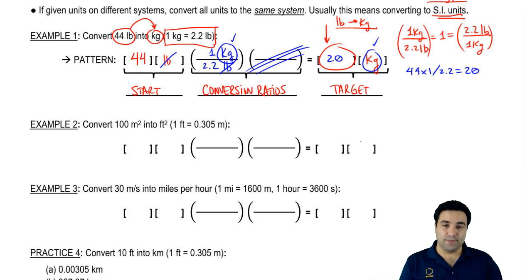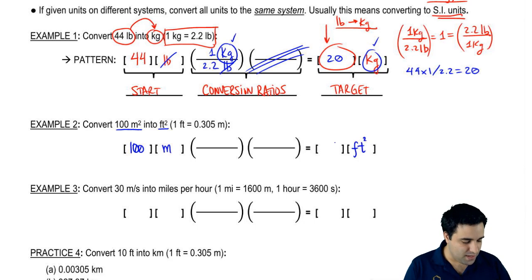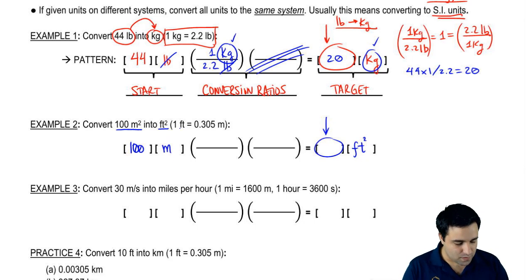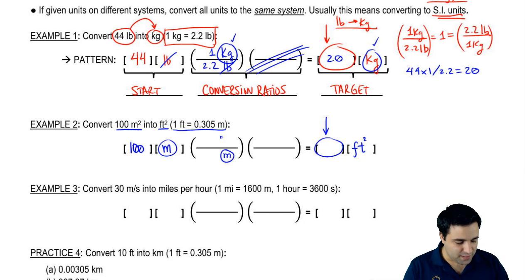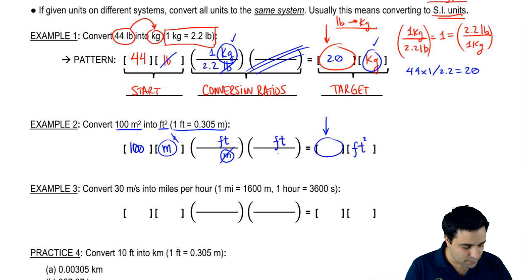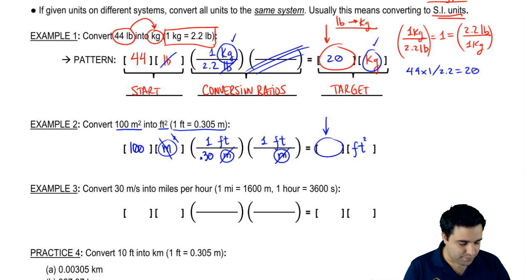In example two, I have 100 meters squared to convert into feet squared. The novelty here — the new thing — is that I have a square, so you have to be careful how to handle those. Starting units: 100 meters squared, and I'm going into square feet. One foot equals 0.305 meters, so meters is on top here — I want meters to go in the bottom, therefore feet is up top. Now, this is actually meters squared, and I'm only canceling one M from the bottom with one M from the top, so I actually have to do this twice, so that the second M cancels with the second M. That's what's different about converting squared units.